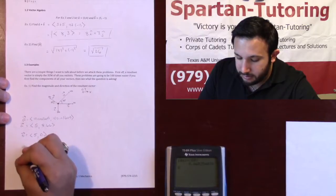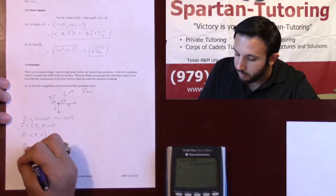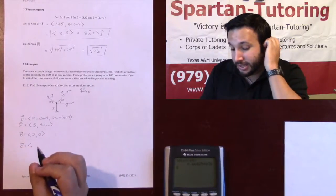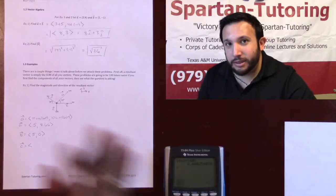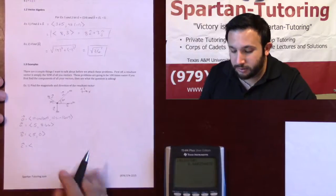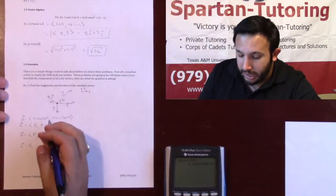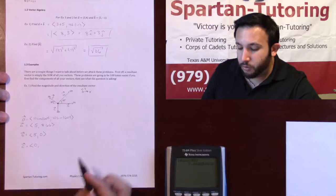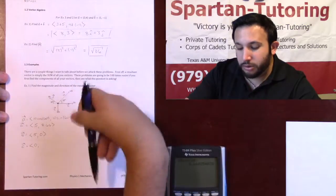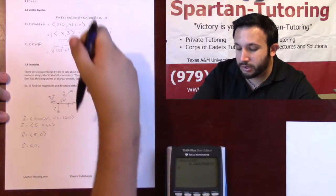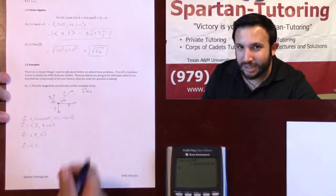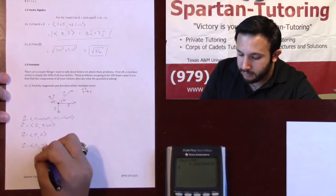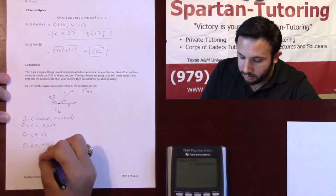Let's take a look at vector C. For vector C, it's different — this time you have nothing going in the x direction. So the x component of C is going to be 0. But as for the y component, notice how it's completely in the y direction, and it's negative. So the y component is going to be negative 30.